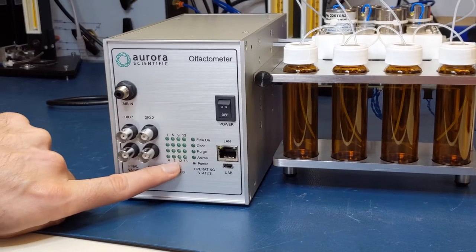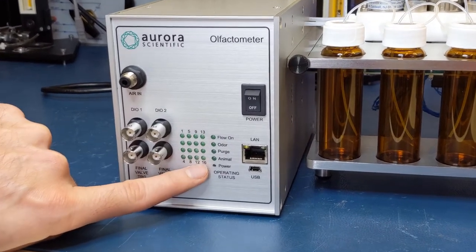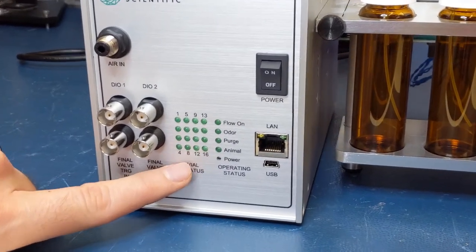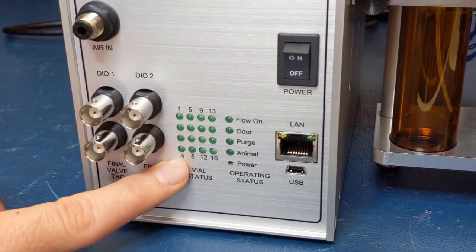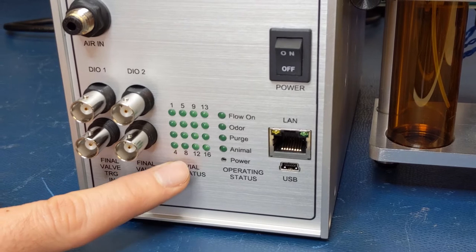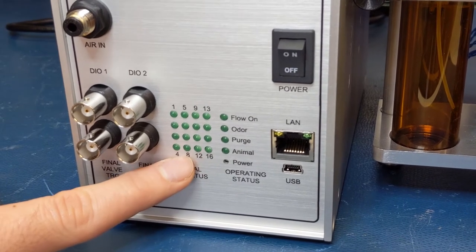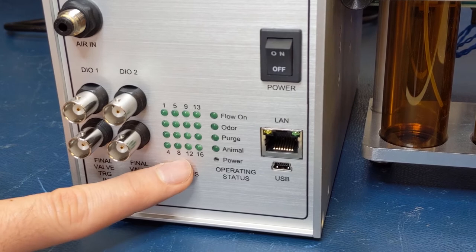Next to these are your vial LEDs, which indicate what vial is currently being used. There are up to 16 odorants that can be used with the system. Each column represents a set of 4 vials, corresponding to each model of olfactometer. The base unit of 4, plus a series of add-on modules to expand to 8, 12, or 16 total.